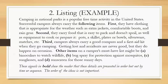Here's the listing order example: 'Camping in national parks is a popular free time activity in the United States. Successful campers always carry the following items. First, clothing appropriate for the weather, such as extra jackets, comfortable boots, and rain gear. Second, food that is easy to pack and doesn't spoil, as well as equipment to cook it — pots, a skillet, plates, silverware, matches, etc. Third, campers always carry a good compass and a first aid kit. Other items on a camper's must-have list might be A, binoculars; B, bug spray; C, sunglasses; and D, sunscreen.' You can see those signals in bold showing the listing order.